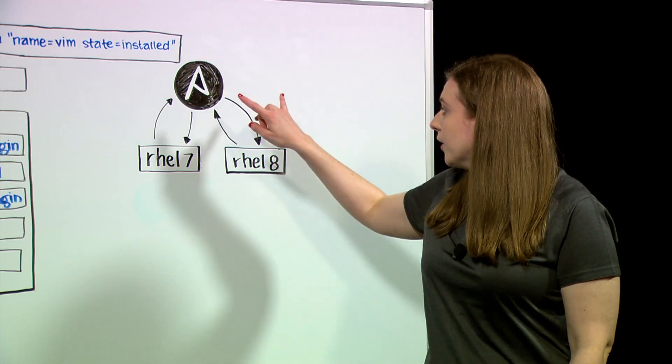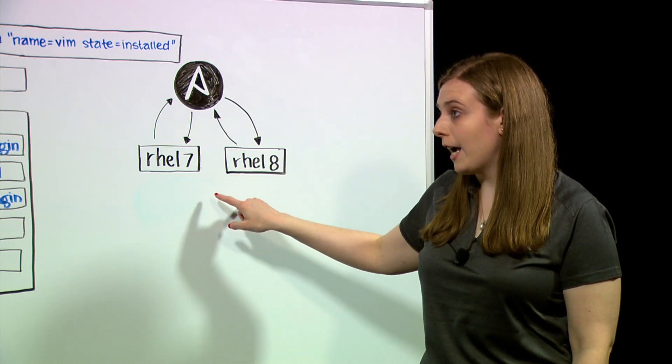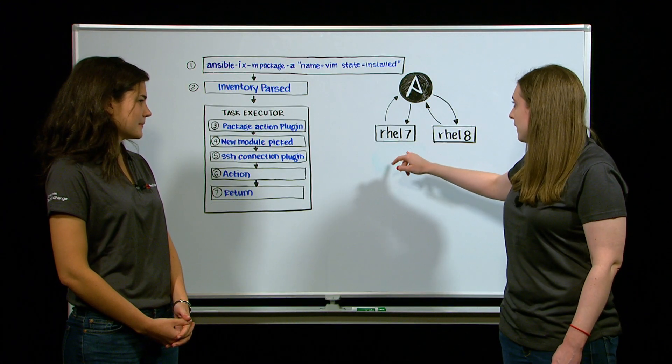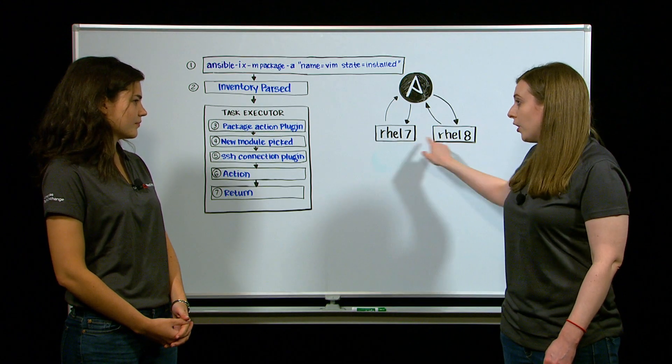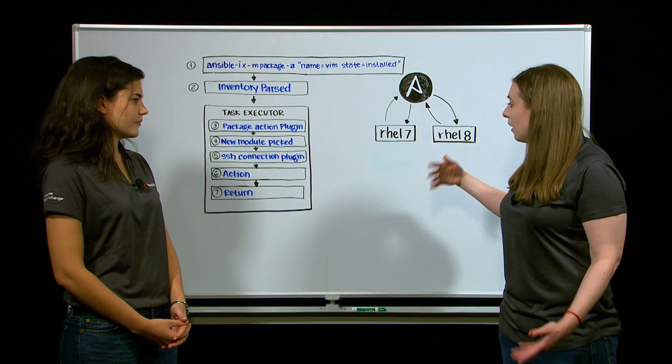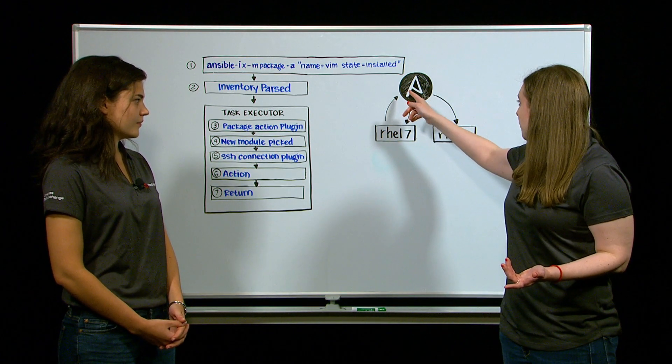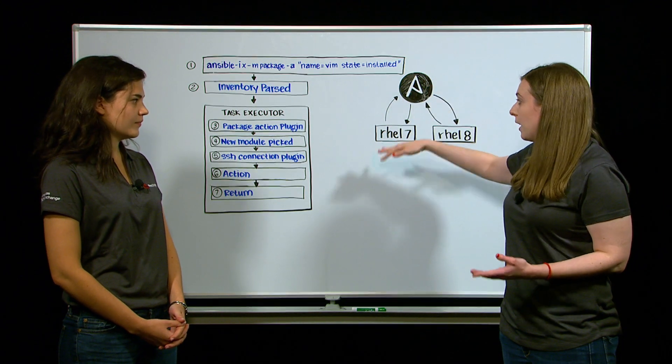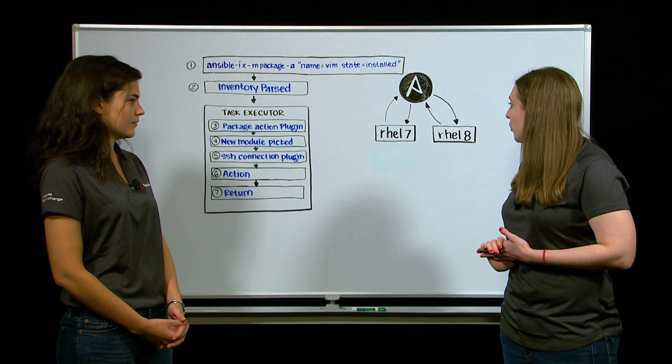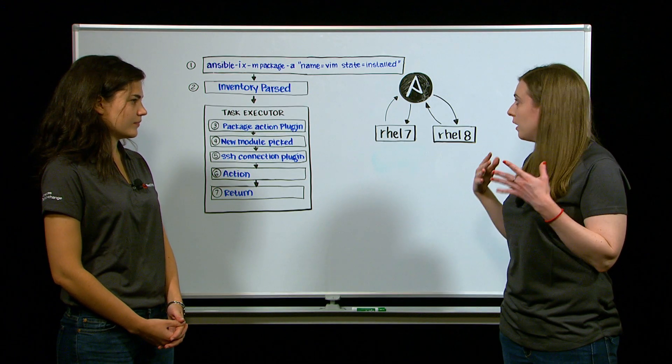Well, once we have the connection, we can actually run the action on both of our hosts. So in this case, it's going to make sure Vim is installed in both these places. Then it's going to return the results back to our Ansible host and the task executor. And the task executor is going to print those results and quit.